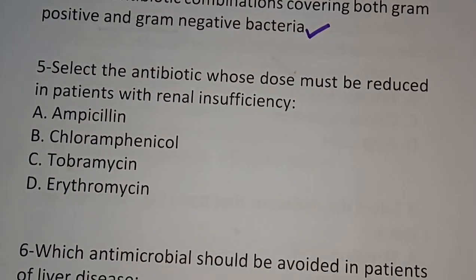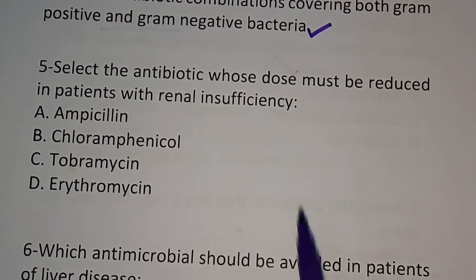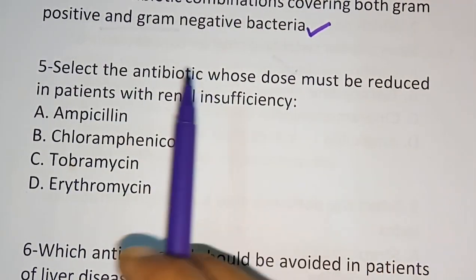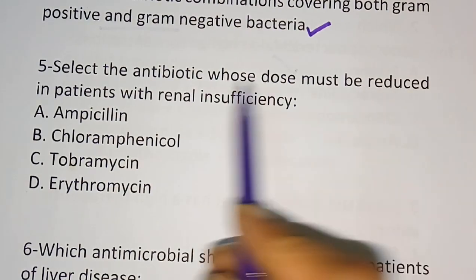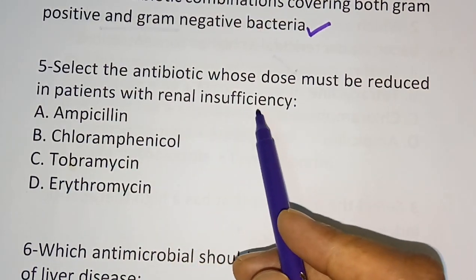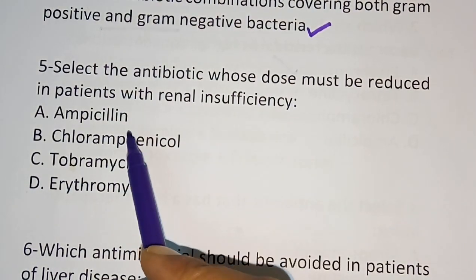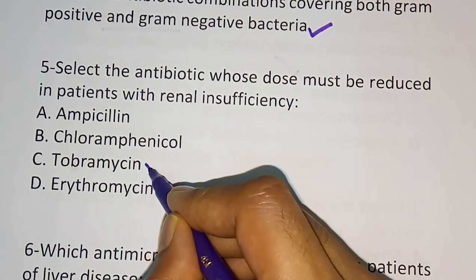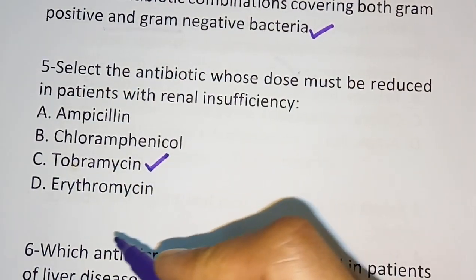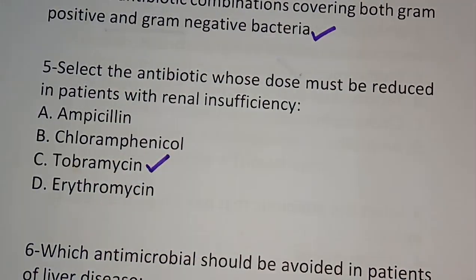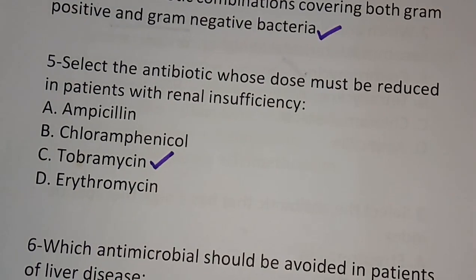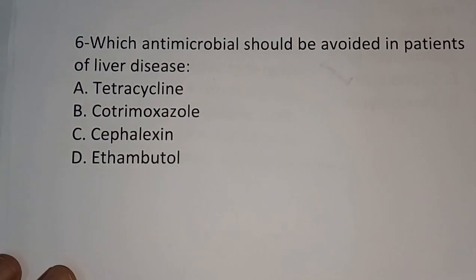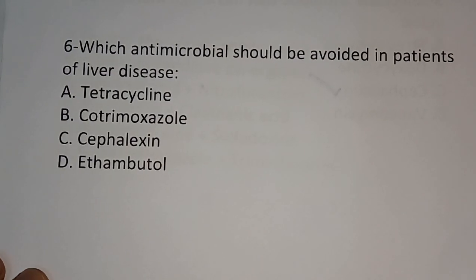Question number five: select the antibiotic whose dose must be reduced in patients with renal insufficiency. Options are: ampicillin, chloramphenicol, tobramycin, erythromycin. The correct answer is tobramycin, which is an aminoglycoside antibiotic.